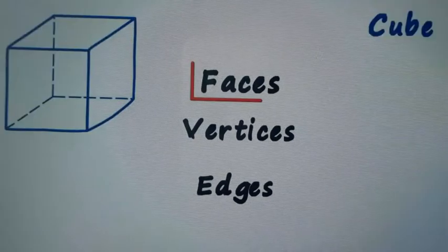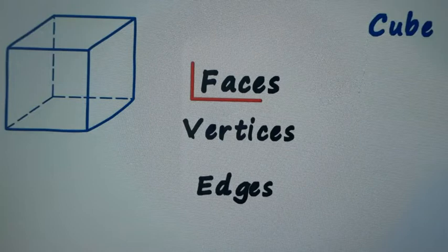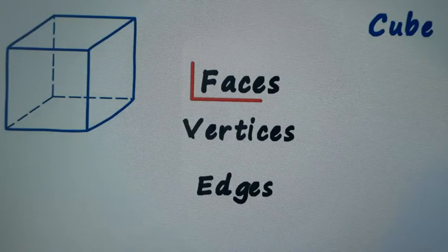Sometimes people call it Euler's formula. In this video today we are going to learn about cube, cuboid, prism, and pyramid. So let's begin now with cube. In case of cube, we know its height, its breadth, and its length all are equal.